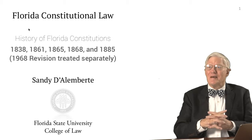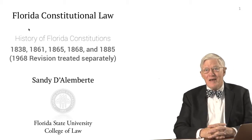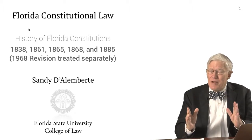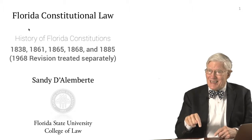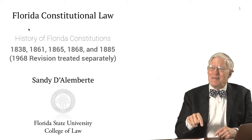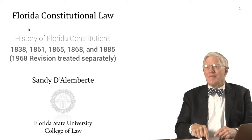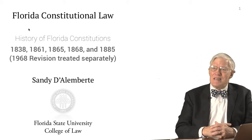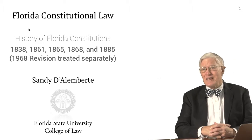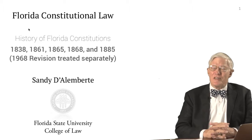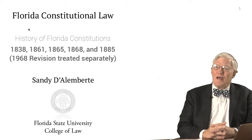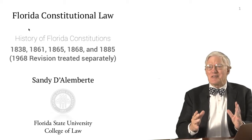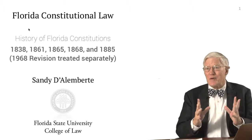Florida then had a constitution as we entered the Confederacy in 1861, the constitution immediately after the Civil War in 1865 — which never became effective because the federal government rejected it — and the Constitution of 1868, which accomplished our re-entry into the United States. We then move to the post-Reconstruction Constitution of 1885, and finally in 1968 we get around to revising that constitution in very substantial ways.